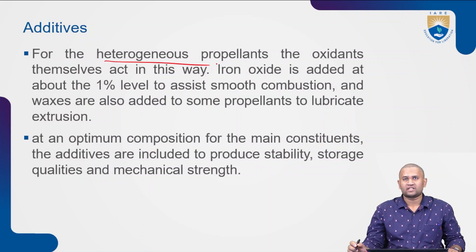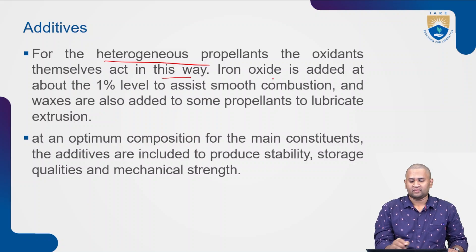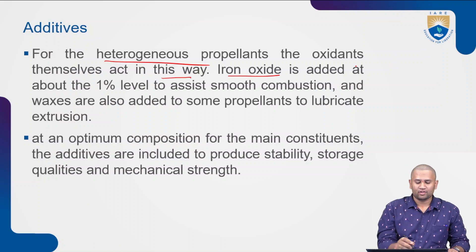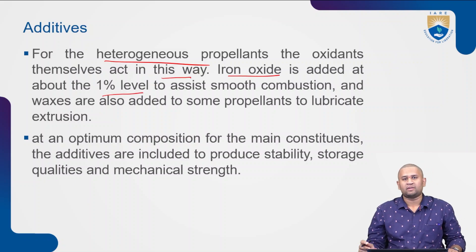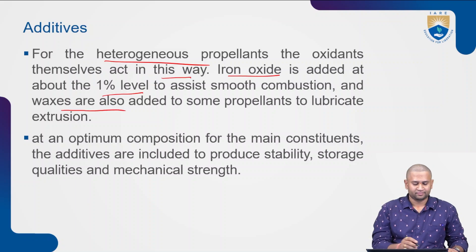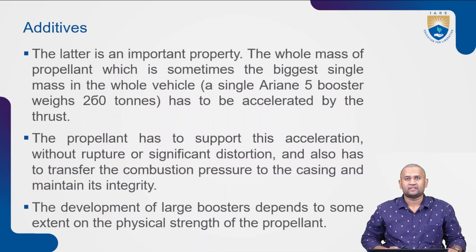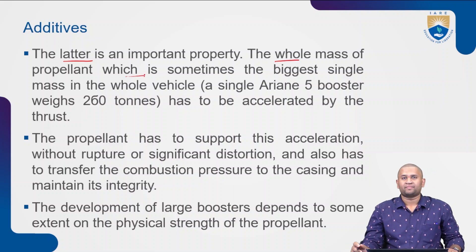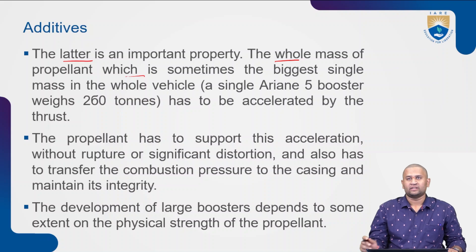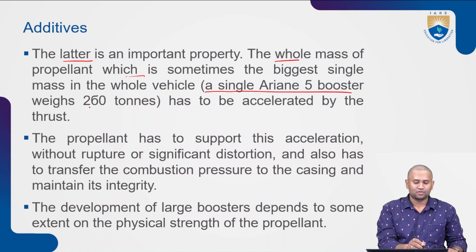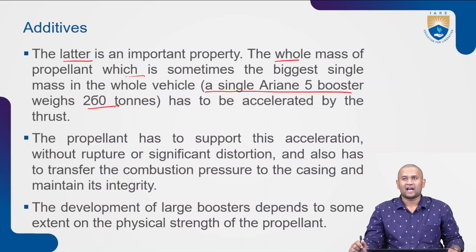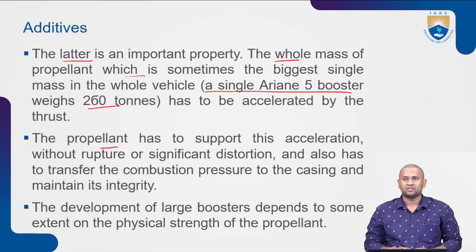For heterogeneous propellants, the oxidants themselves act in this way. Iron oxide is added at about the 1% level to assist smooth combustion, and waxes are also added to lubricate the extrusion. At an optimal composition for main constituents, additives are included to produce stability, storage qualities, and mechanical strength — which is the whole mass of propellant, sometimes the biggest single mass of the whole vehicle. For example, a single Ariane 5 booster weighs around 260 tons, and that has to be accelerated by the thrust.